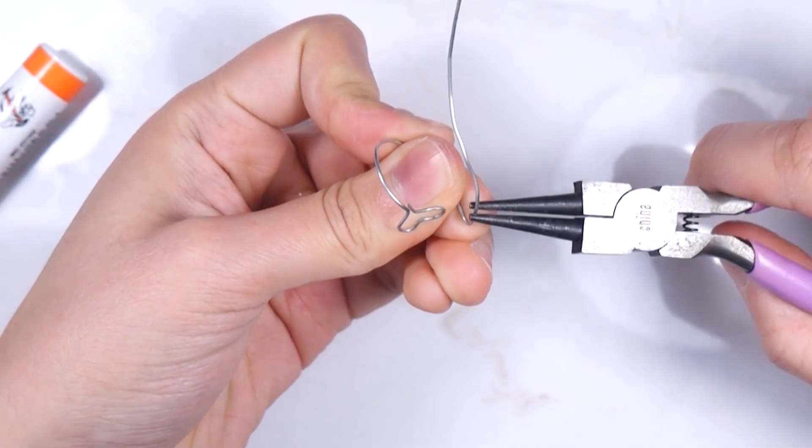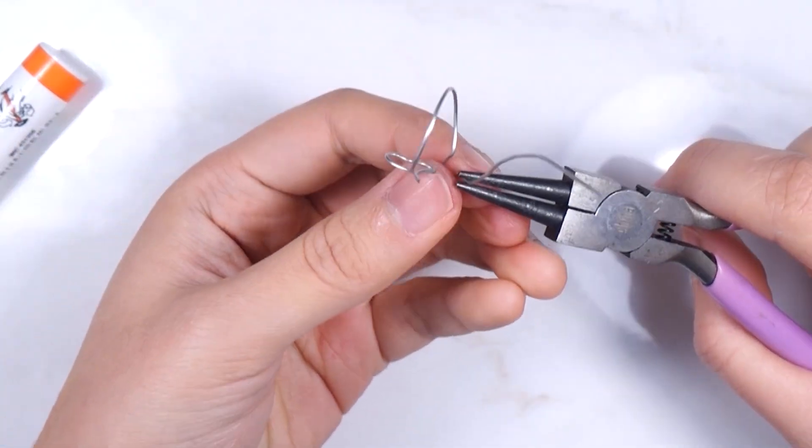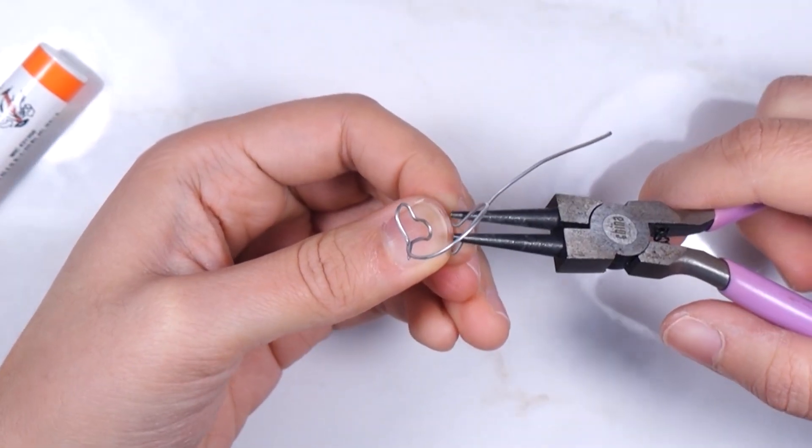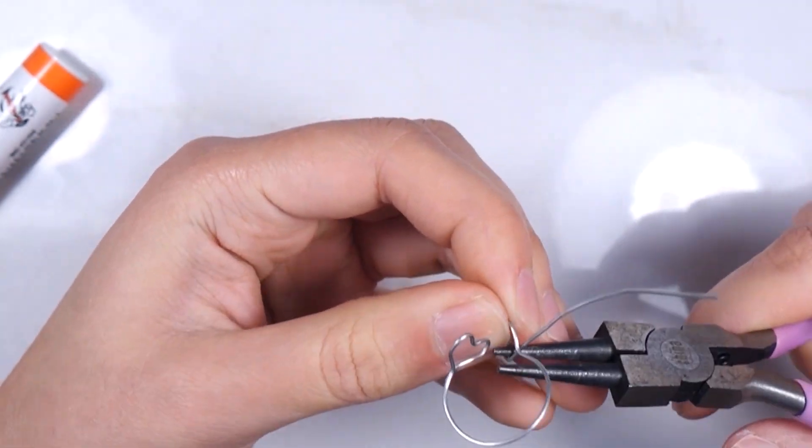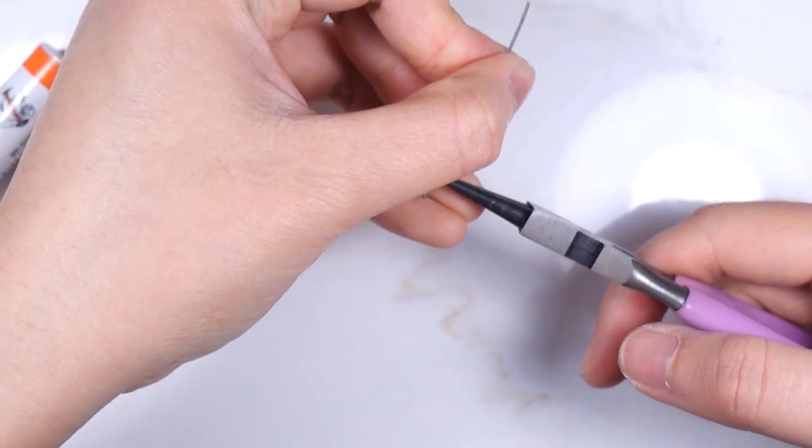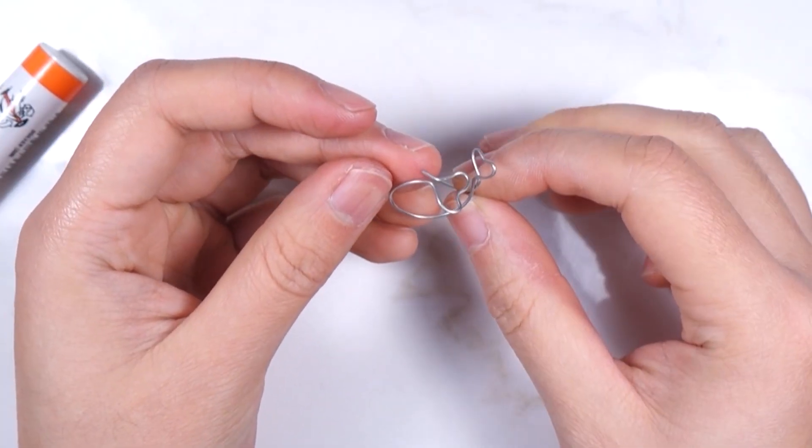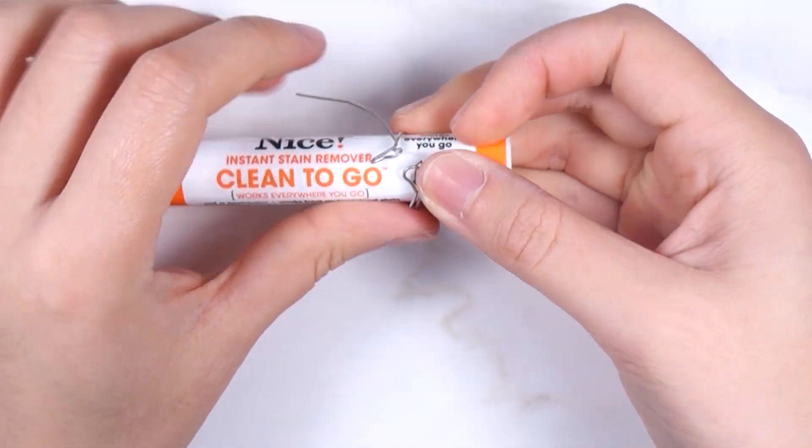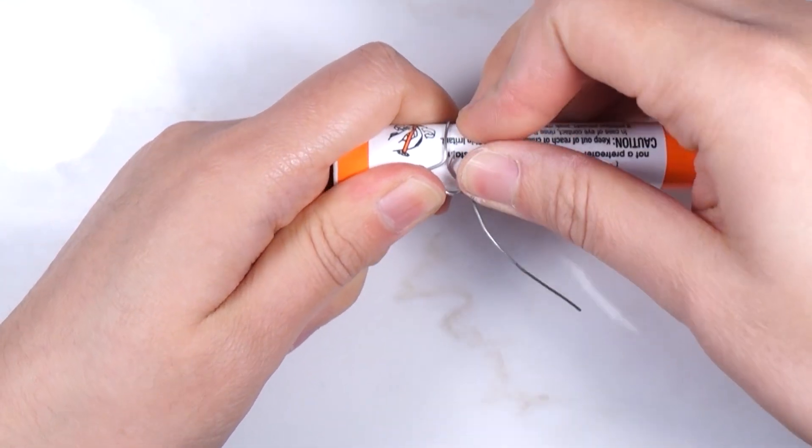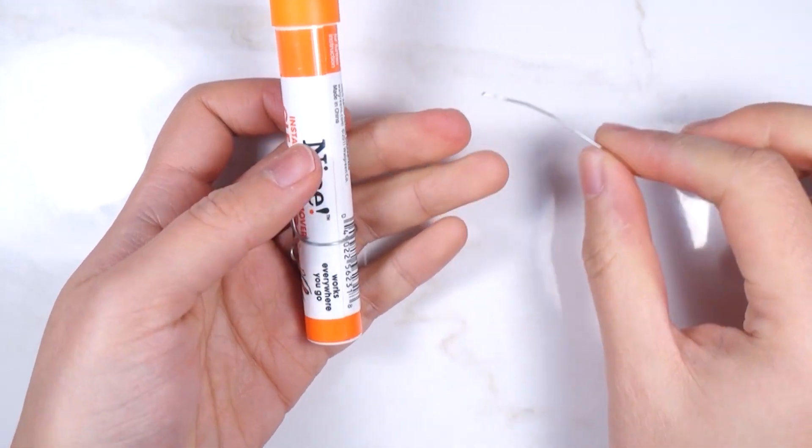Now make the second heart. I'm making it a bit smaller than the first one. Once you've made the second heart, slide it back to the cylinder and flatten the heart and adjust the ring. Cut off the extra wire. Slide it out again.